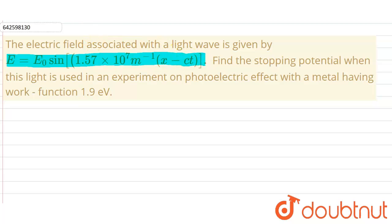Find the stopping potential when this light is used in an experiment on photoelectric effect with a metal having work function of 1.9 electron volts.